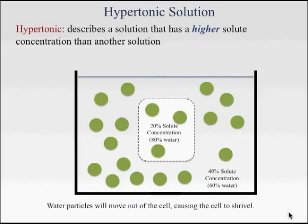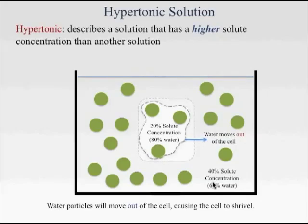Water particles will want to move out of the cell causing the cell to shrivel. The reason being that there's 80% water concentration inside the cell and only 60% on the outside of the cell. So water is going to move out of the cell and we'll see the cell shrivel.